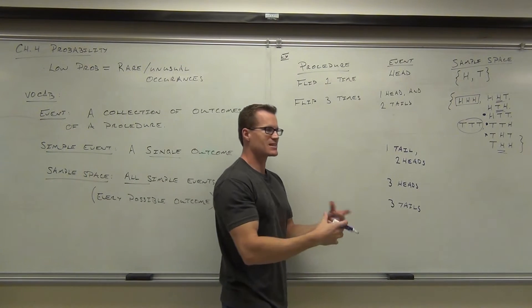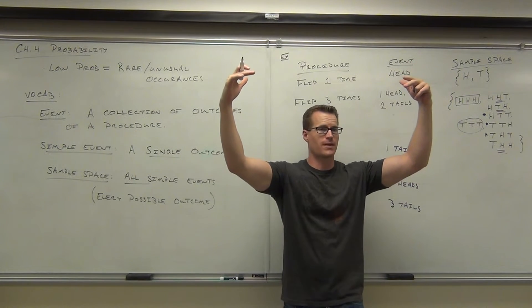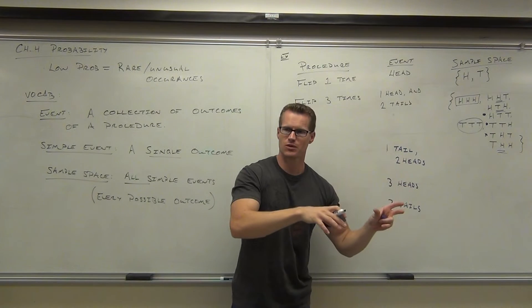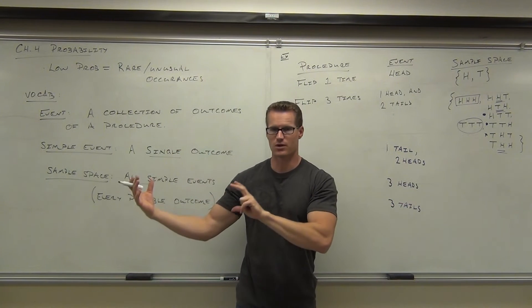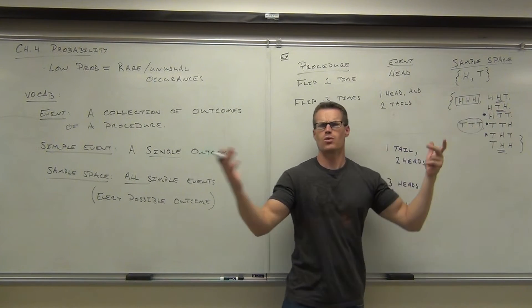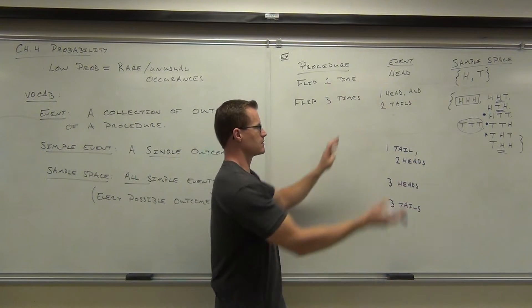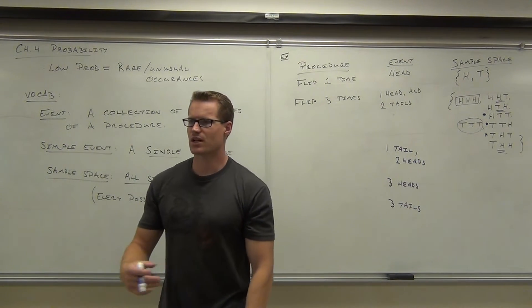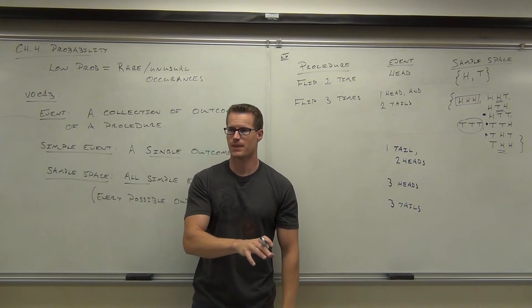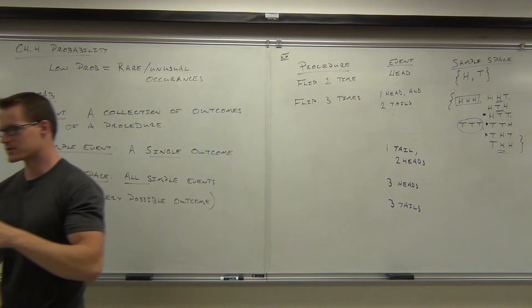I'm doing it around, but I mean this is the relationship between simple events and events. Events are the overall thing you're looking for, okay? That's it. Simple events are the individual outcomes that you could get from your procedure. Some of those simple events are going to satisfy your event. Maybe only one. Maybe up to three. Maybe more than that. If we were flipping a coin four times, you could have lots of outcomes that satisfy your event. Do you understand the relationship between procedures, events, and simple events and the sample space? Sample space is not a problem. We just collect all the individual simple outcomes and that's it. Or simple events and that's it.